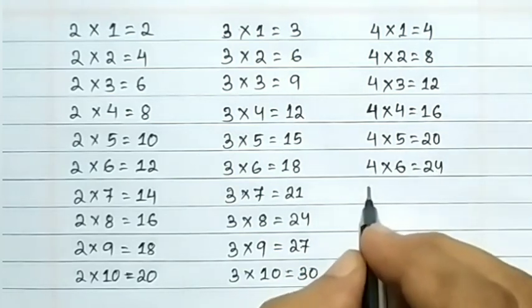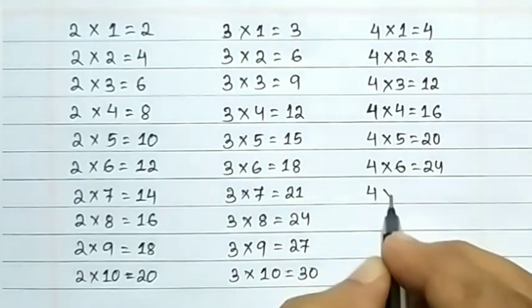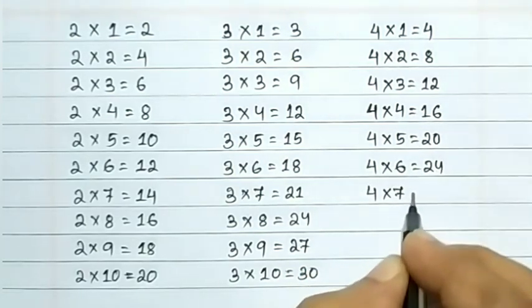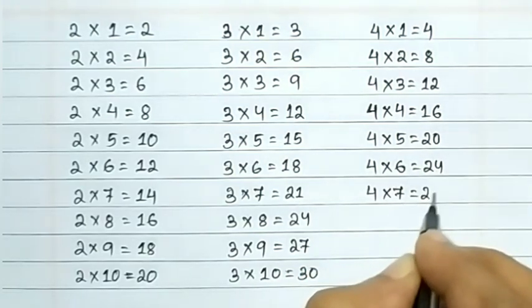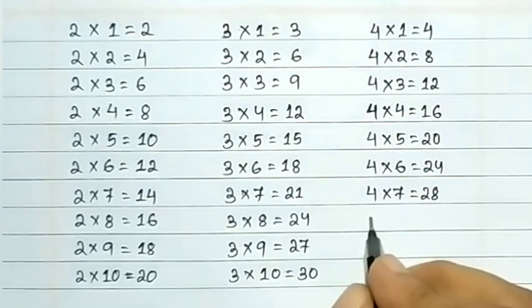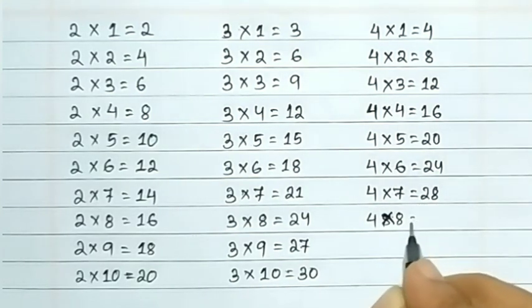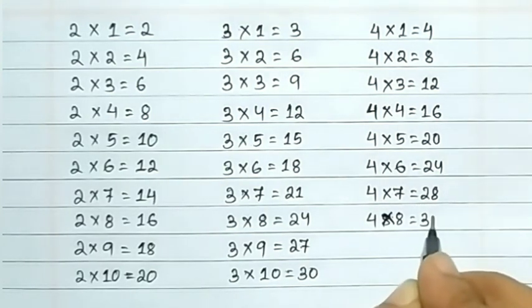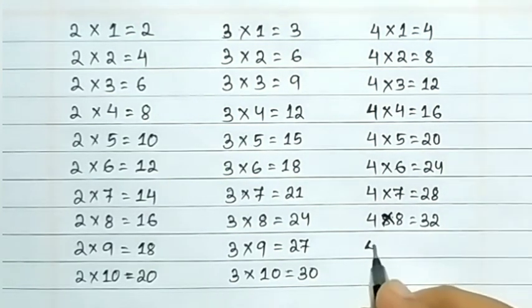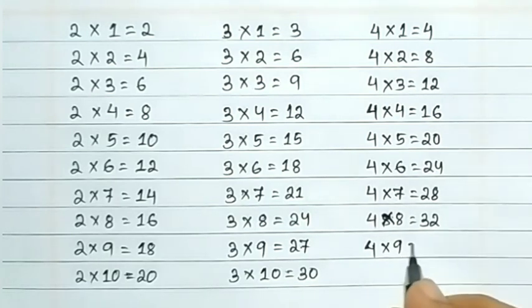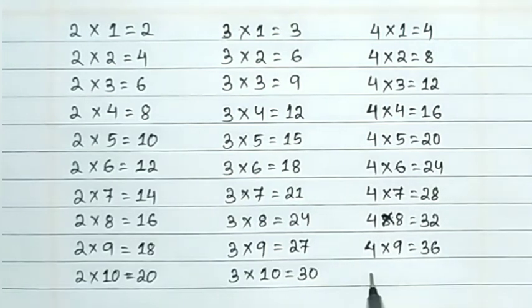4 7s are 28, 4 8s are 32, 4 9s are 36, 4 10s are 40.